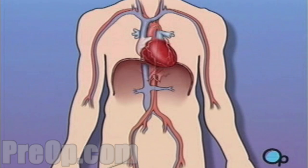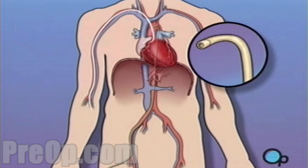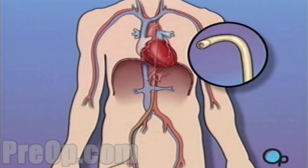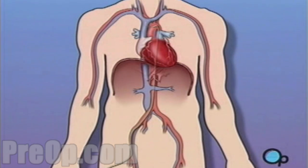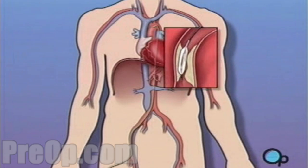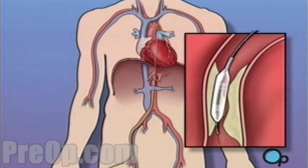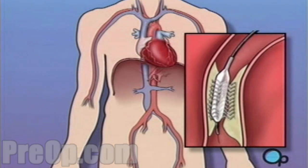During a balloon angioplasty, a heart specialist will insert a thin tube into the artery in your arm or leg and gently guide it towards the problem area in your heart. Once the tube is in place, a small balloon is briefly inflated in order to widen the narrowed artery. A short length of mesh tubing called a stent is then inserted into the newly widened artery.